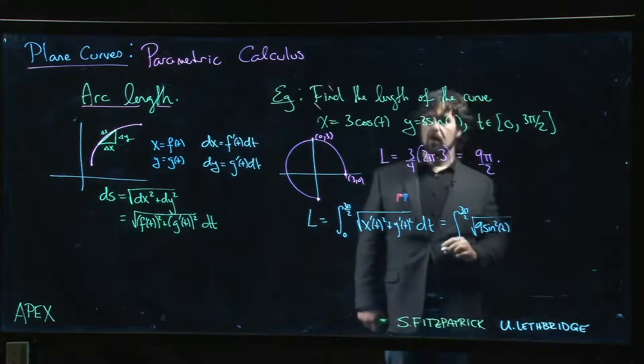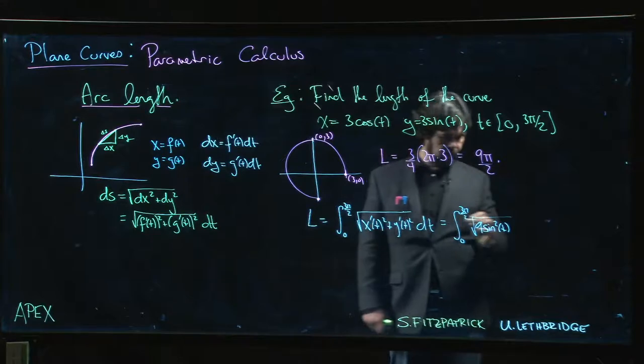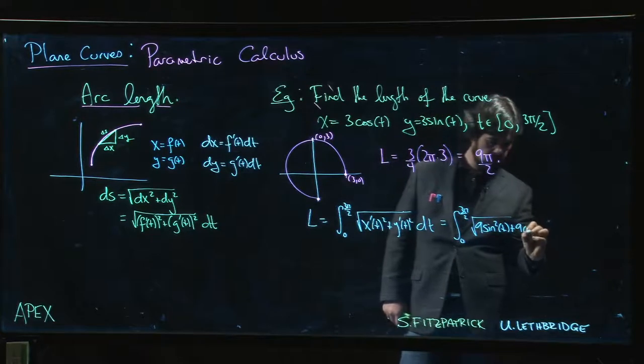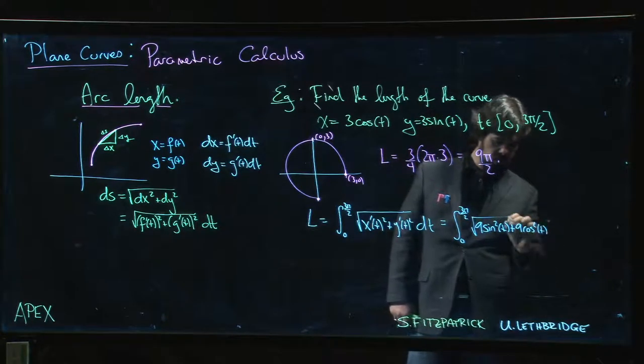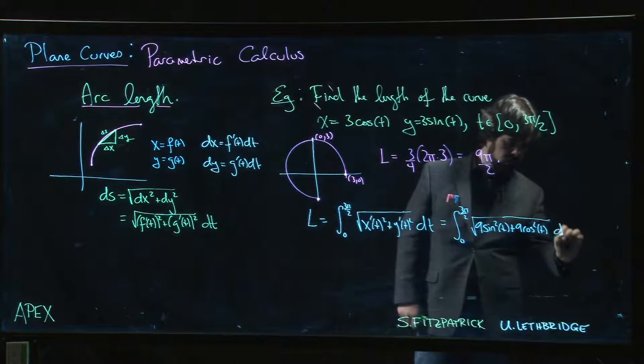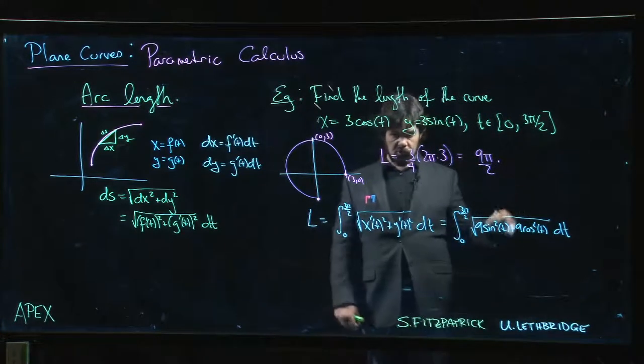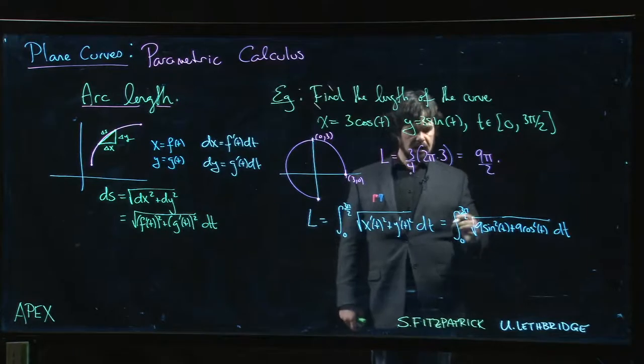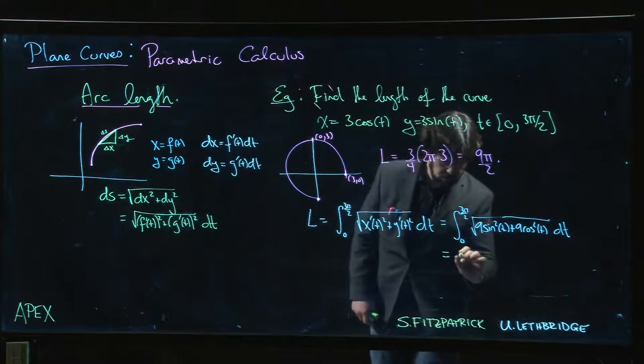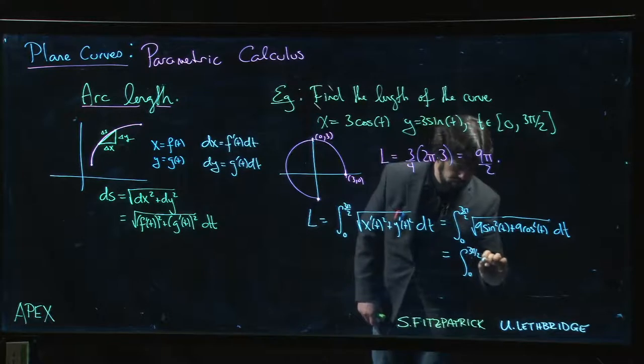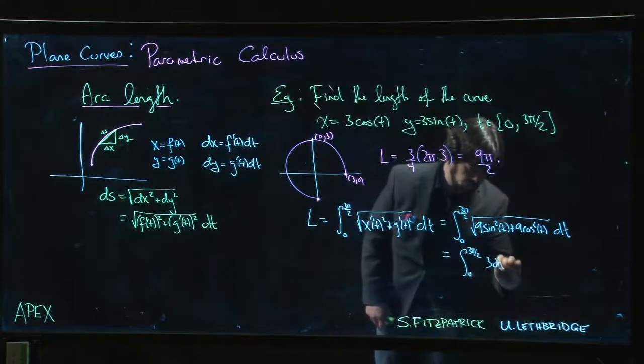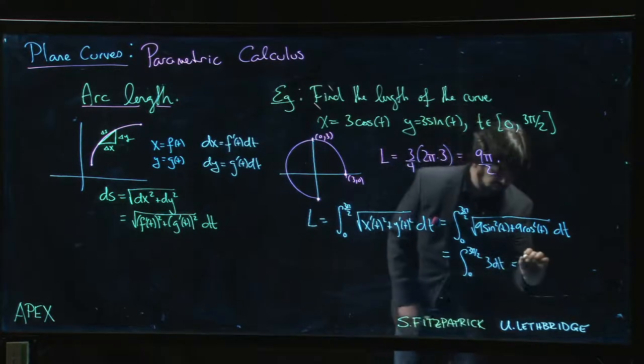And of course we can factor out the 9. sin²+cos²=1, square root of 9 is 3, and we just have the integral from 0 to 3π/2 of 3 dt, and that's just going to be 3 times 3π/2.